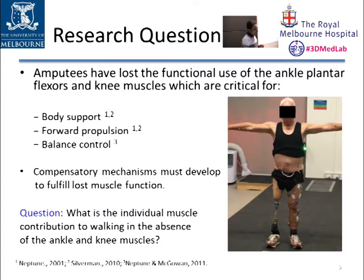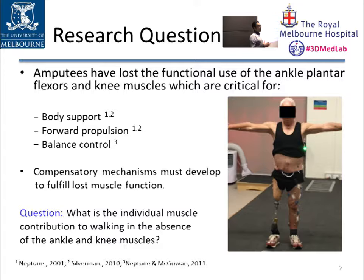To approach this aim, it is important to know how much force each muscle of the lower limb is generating during walking from point A to point B. In non-amputees, ankle plantar flexors play a critical role in walking — in body support, forward progression, and medial-lateral balance. In the absence of these muscles and knee muscles of one leg among amputees, the prosthetic or other intact and residual muscles must compensate for the functional use of the lost muscles.